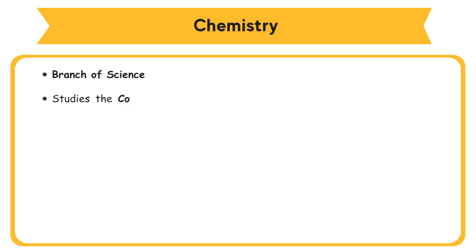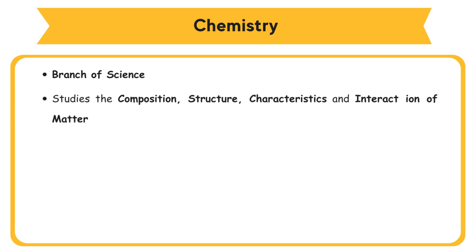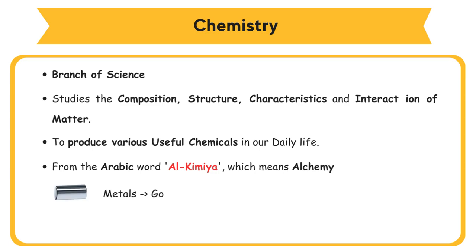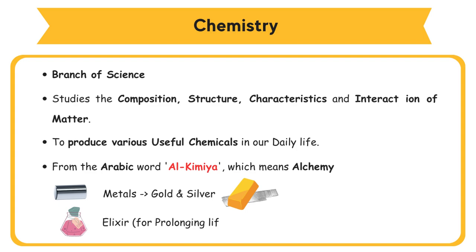1.1 Development in Chemistry Field and its Importance in Daily Life. Chemistry is a branch of science that studies the composition, structure, characteristics, and interaction of matter. Chemistry enables us to produce various useful chemicals in our daily life. The word chemistry is believed to originate from the Arabic word 'alchemia', which means alchemy — an art of transforming common metals into gold and silver, and the production of elixir, a substance that prolongs life.